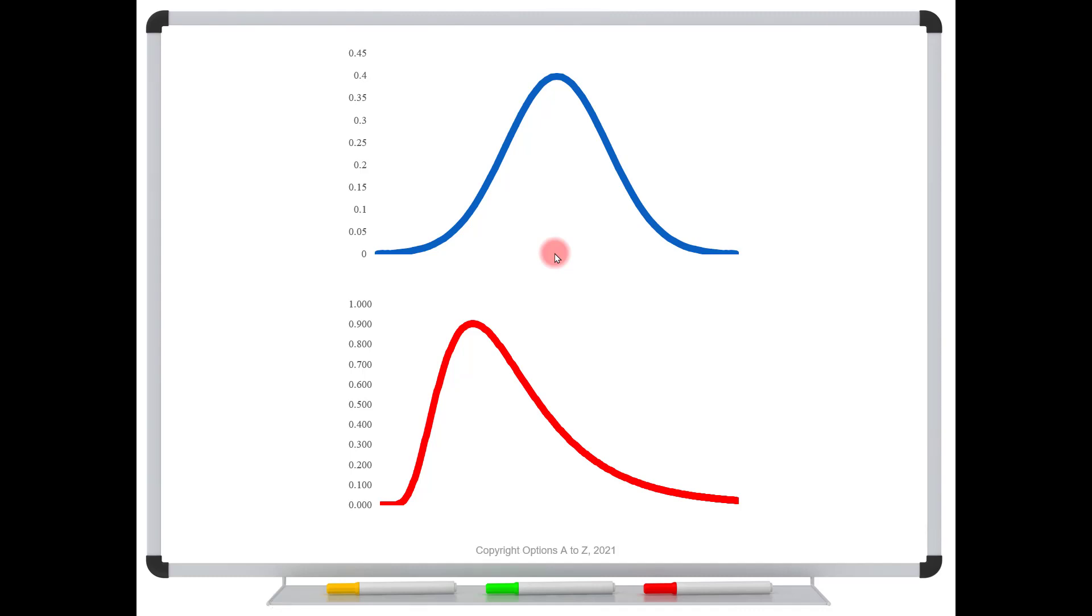If we made it a big enough standard deviation, we would have to allow for negative stock prices, which of course, fortunately for us as stock traders, can happen. They can only go to zero. And if we look at a log normal curve, it can only go to zero. So that also implies that there's not as much potential for the downside.